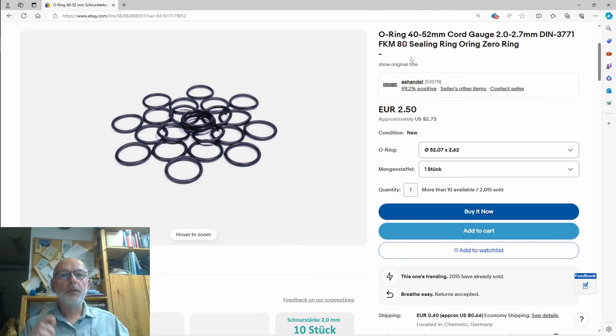That was the O-ring, one was 52.07, these are imperial O-rings, times 2.62 millimeters for €2.50 plus 60 cents shipping from AS Handel. The other size was exactly the same price, €2.50.